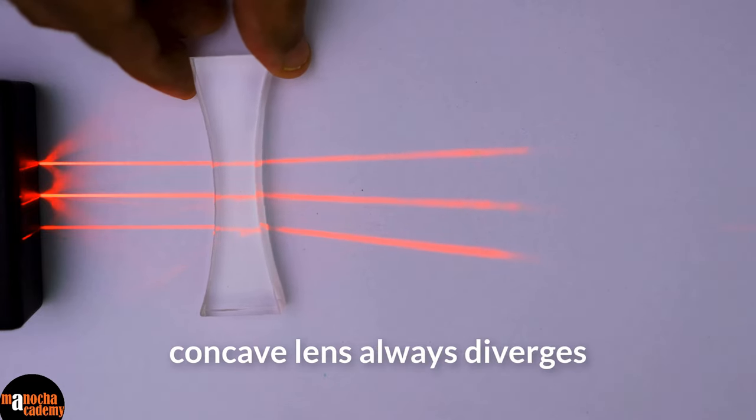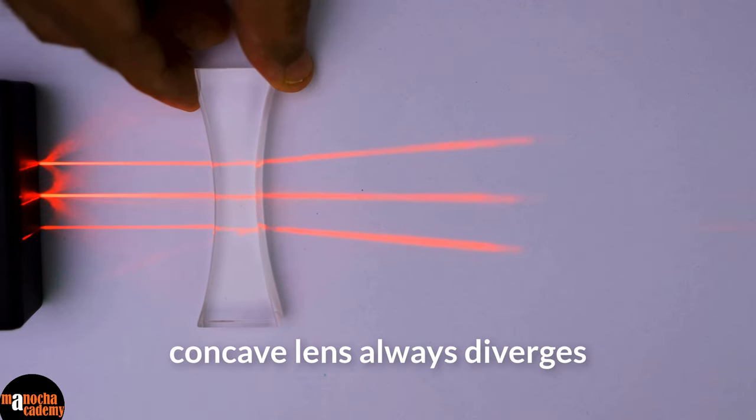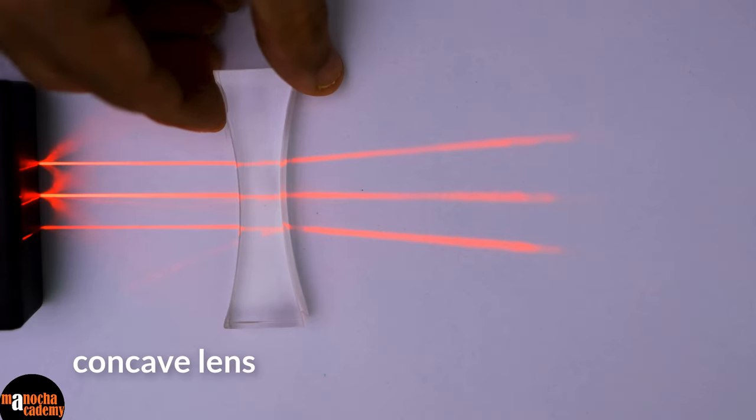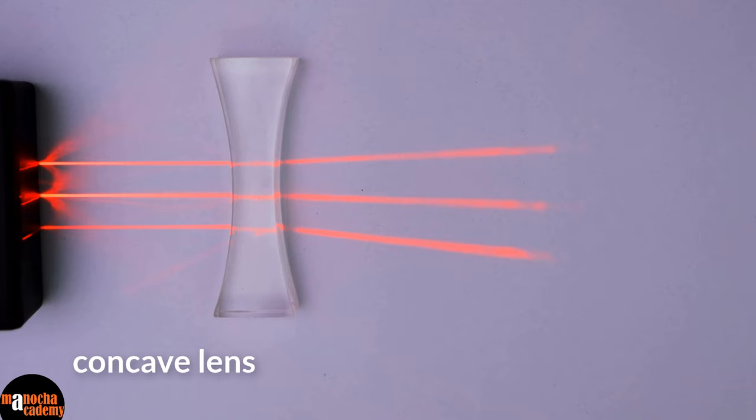If you move the lens, you can see that the concave lens always diverges the light rays. Let's try something interesting now. First I will place a concave lens here. As expected, it is diverging the light.